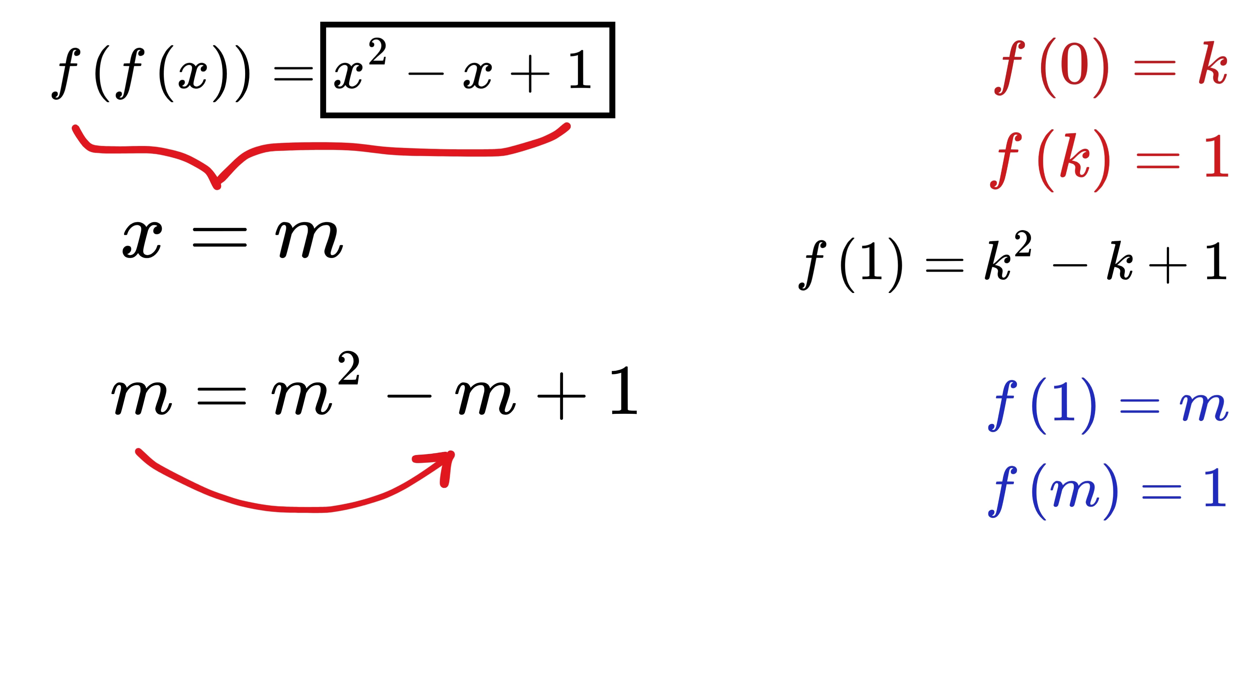Oh, wow! Take this m on this side to get m square minus 2m plus 1 equals 0. Hey, this is a perfect square, m minus 1 whole square, and that equals 0. So, we get m equals 1. This means we found f of 1, which is equal to 1 itself.